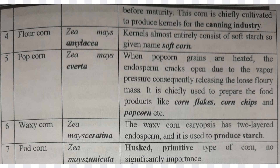The next one is Flour Corn, Zea mays amylacea. Its kernel is completely soft starch, therefore it is known as soft corn. The next one is Popcorn, Zea mays everta. When we apply heat, the endosperm cracks due to vapor pressure and it loses a flory mass. It is chiefly used to prepare food products like cornflakes, corn chips, and popcorns.